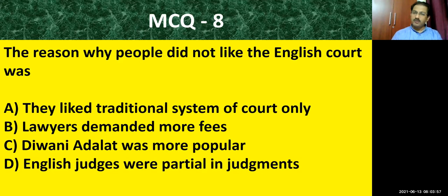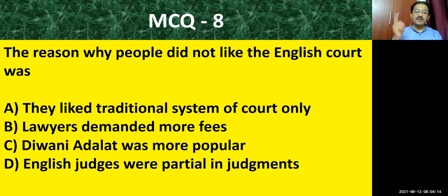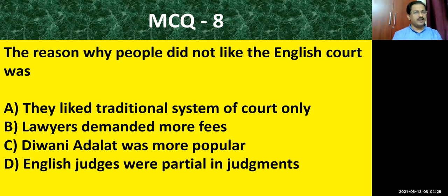Hope you have scored seven out of seven so far. Now we are on the eighth question: the reason why people did not like the English court. Options: they liked the traditional system of courts only; lawyers demanded more fees; Diwani Adalat was more popular; English judges were partial in judgment. The most relevant correct answer is: English judges were partial in judgment — it was very difficult for an Indian to get judgment against a European citizen from a European judge.